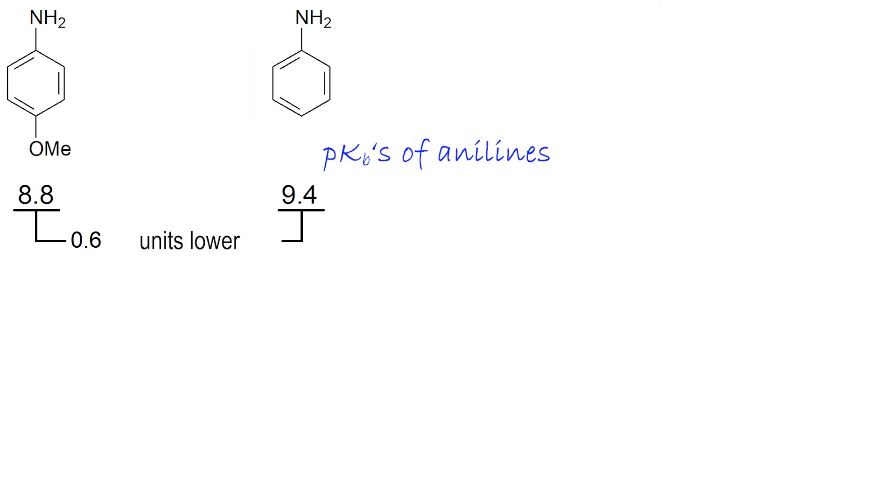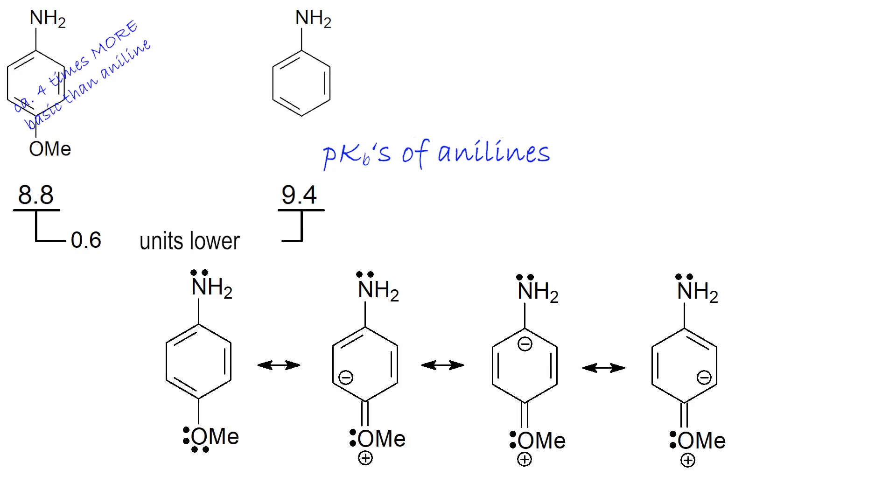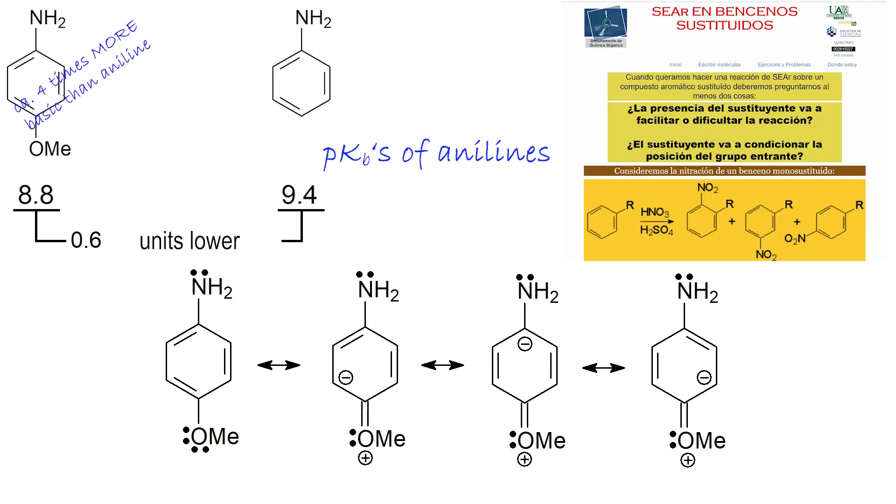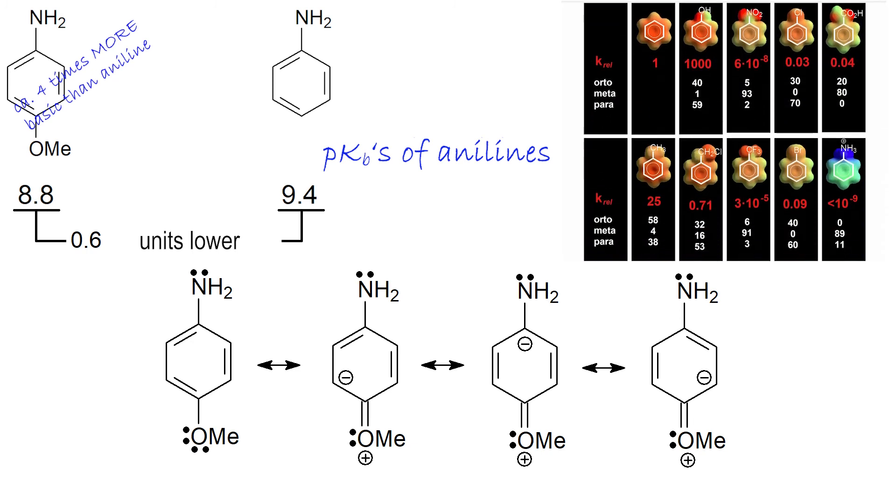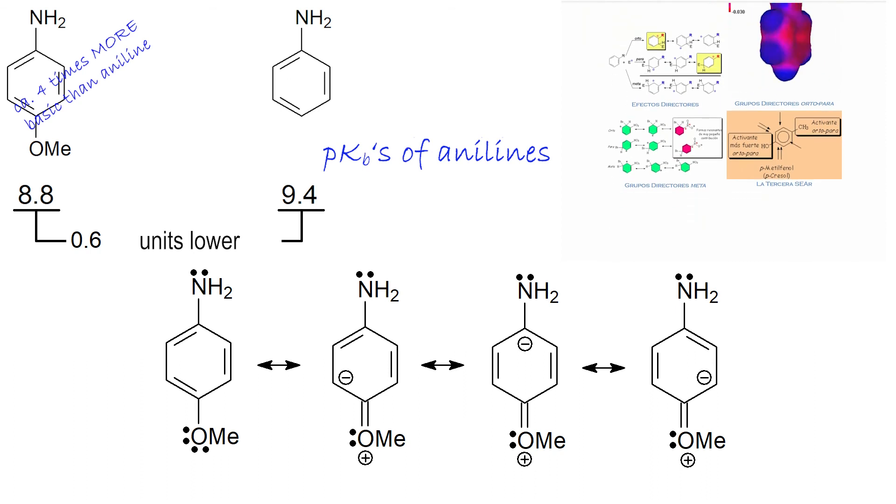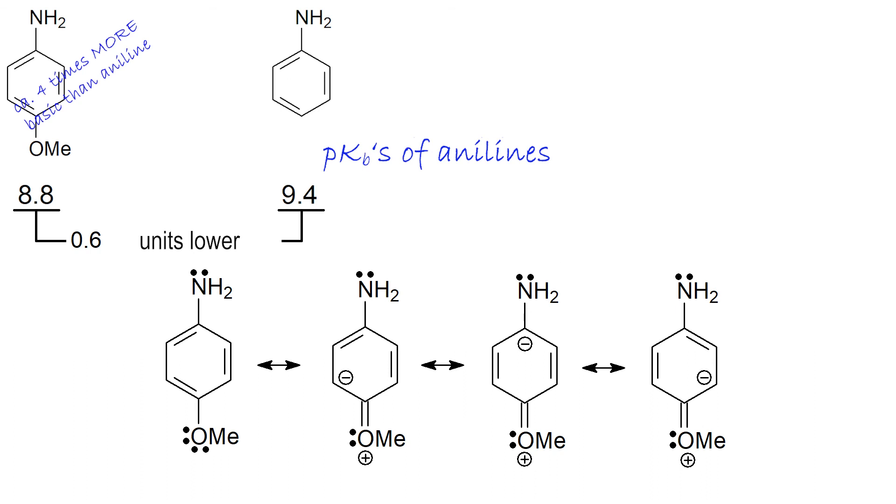At the other end of the pKb scale, basicity increases 0.6 units of pKb from aniline to paramethoxy aniline, which is thus 4 times more basic than the former. The electron-releasing O-methyl group increases the electron density of the aromatic ring, as it was mentioned in the chapter of aromatic electrophilic substitution, making the NH2 retain its electron-lone pair more strongly than in unsubstituted aniline. The small diminution indicates that the effect of O-methyl from that position is not very strong.